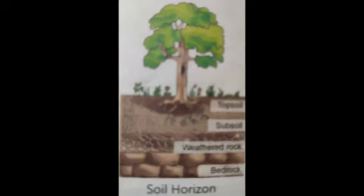The next topic of the chapter is the classification of soil. The soils are classified on the basis of color, texture, fertility, mineral content, etc. In India mainly we have six types of soils. The first is alluvial soil. Alluvial soils are formed by the deposition of sediments brought down by rivers. They are very fertile. In fact, alluvial soil is the most fertile soil in the world.